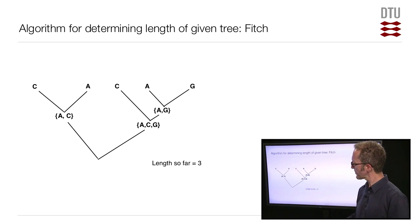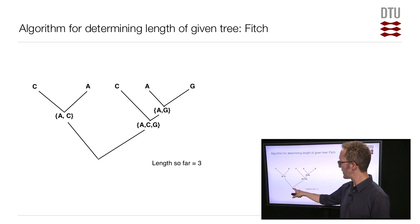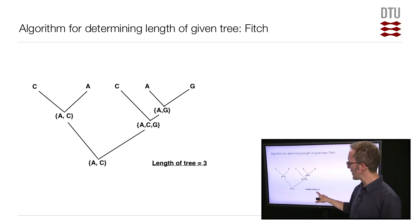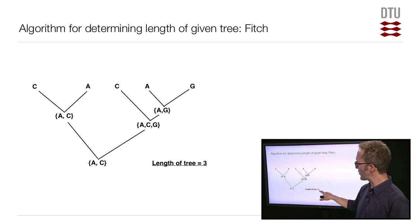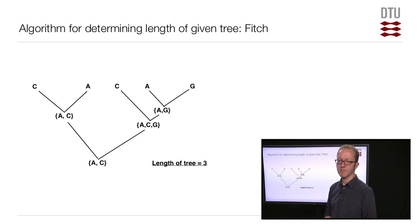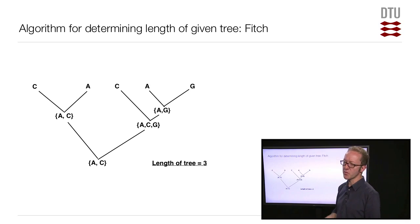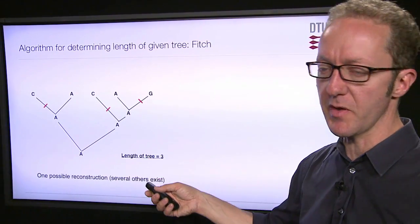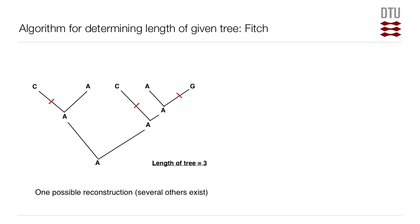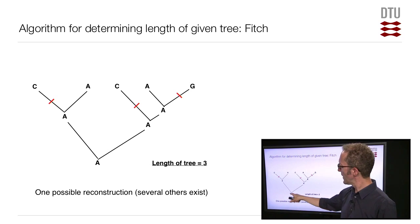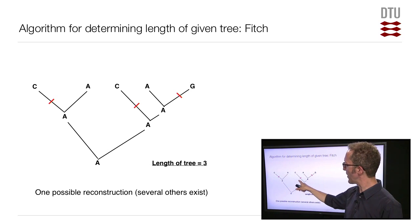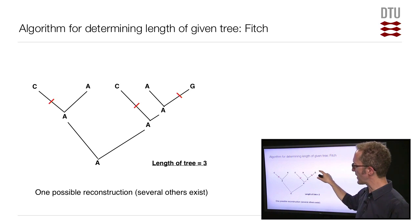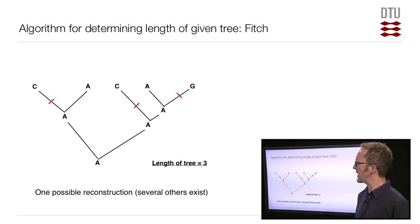Now we're down to the root. One descendant is the internal node with state set {A, C}, and the other has {A, C, G}. They do have something in common — A and C — so we assign {A, C} to the root without increasing the tree length. The algorithm is done, and the total length of this tree is 3. To verify: if we assume the ancestor was an A and all other ancestral nucleotides were also A, we see one mutation to C, another mutation to C, and one mutation to G — three mutations total, confirming our result.